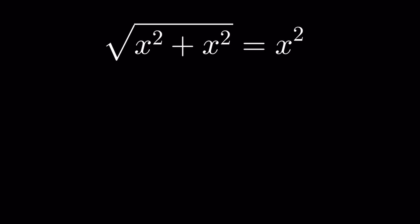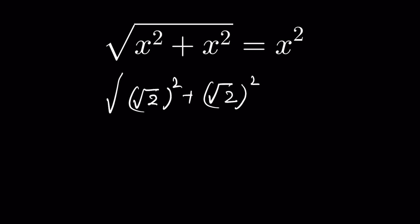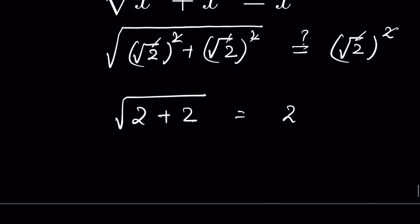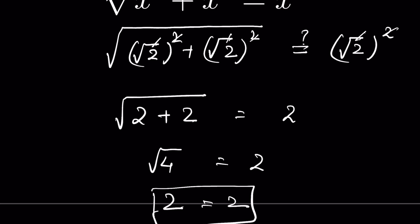Let's verify the solution. Substituting x = √2: √((√2)² + (√2)²) = we check if it equals (√2)². Removing the square root with the square gives √(2 + 2) = 2. So 2 + 2 is 4, and √4 = 2. LHS equals RHS.